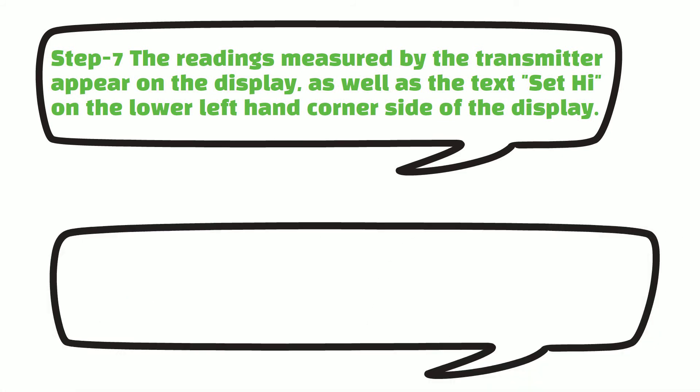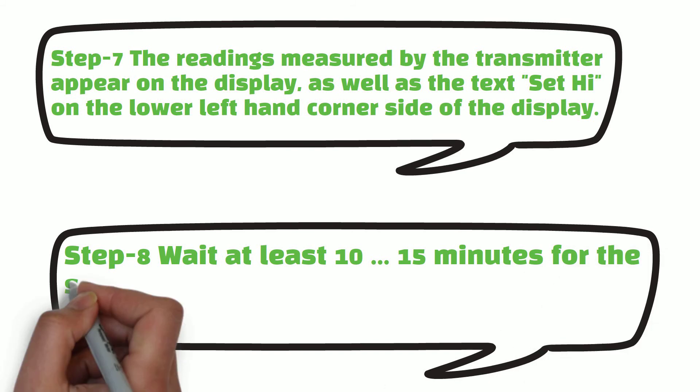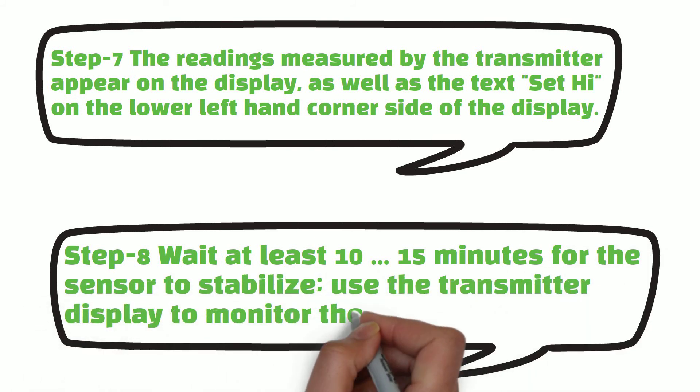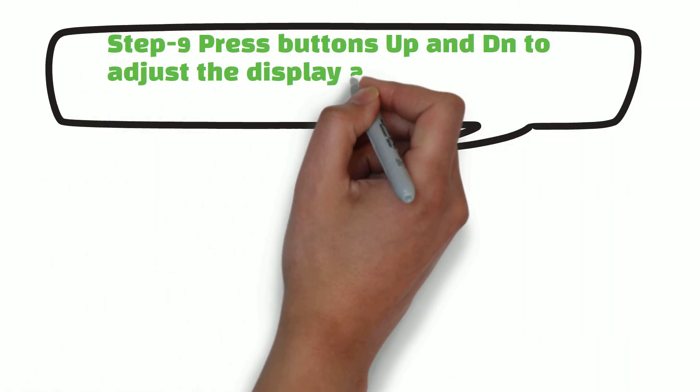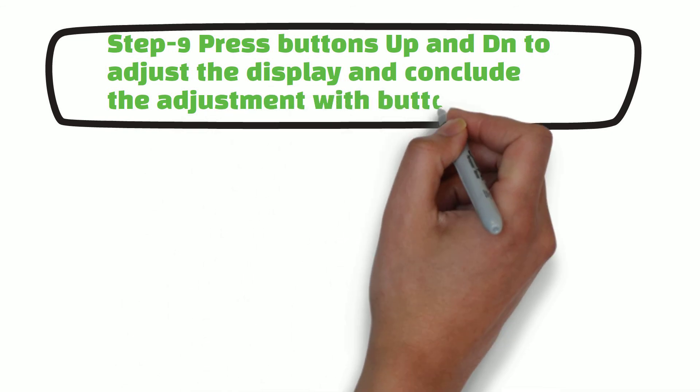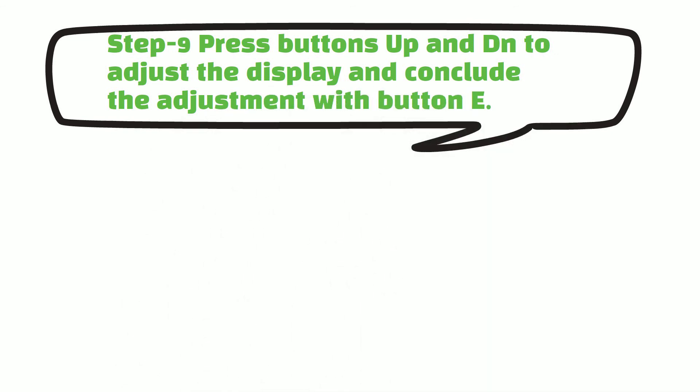Now, wait 10 to 15 minutes till humidity values stabilize. When humidity values stabilized, use up and down key to adjust display reading to 75% RH. After this press enter button to accept this value.